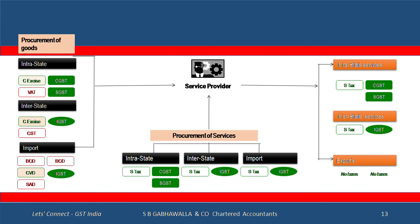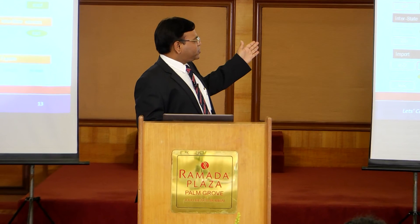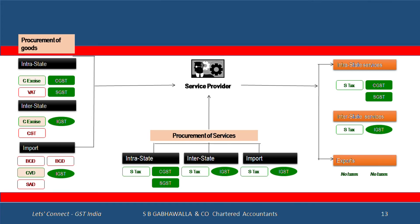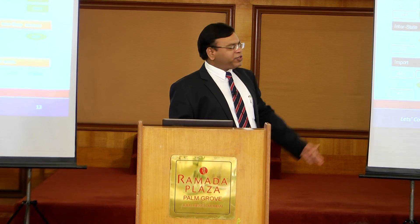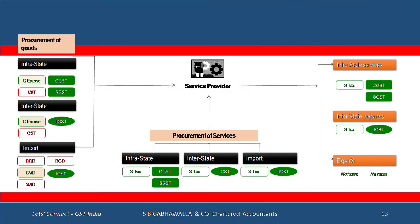Now looking at the service sector: typically service providers today bear a cost of VAT and CST — that goes away, which is very important. On the procurement side, excise gets replaced by CGST and that credit is now available, whereas today they are not eligible. Similarly, interstate CST — not available as credit — now IGST is fully available as credit. SAD, which is a cost for service providers, will no longer be a cost, and IGST credits will be available.